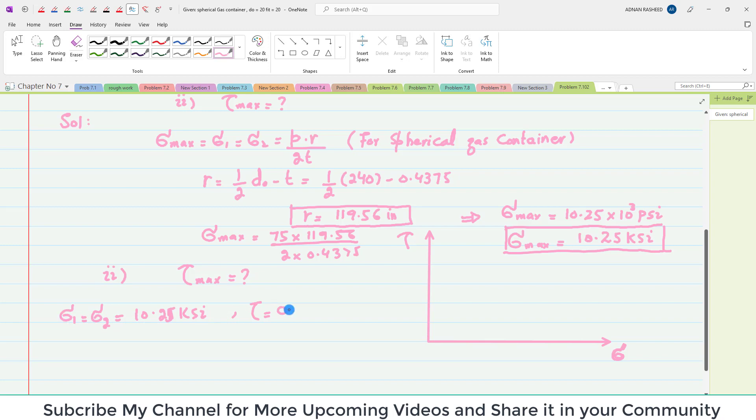If you plot this sigma 1 comma 0, it will lie at this point. This will be sigma 1 = 10.25, 0. If you plot sigma 2 comma 0, both will be the same point.